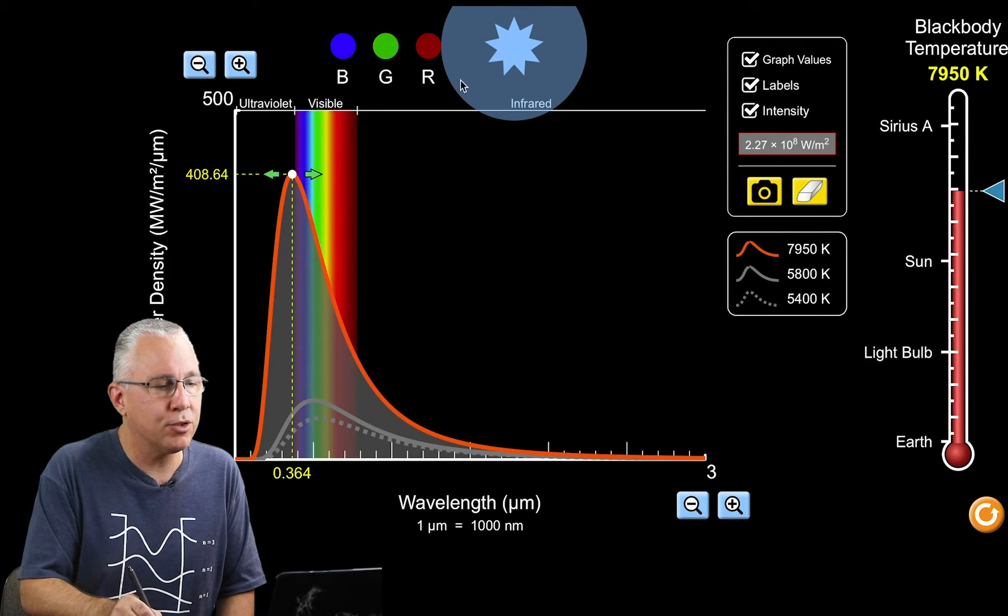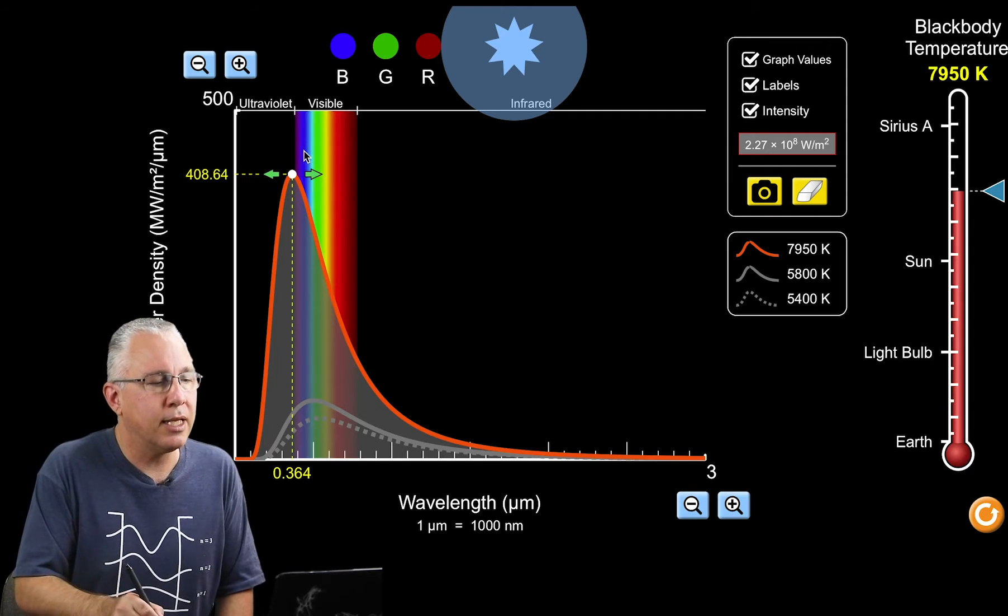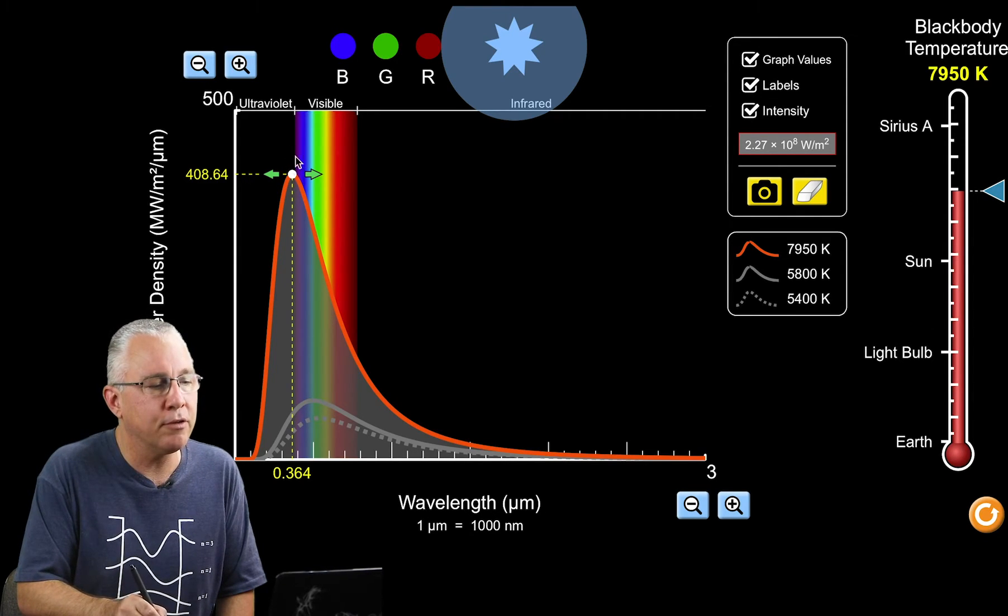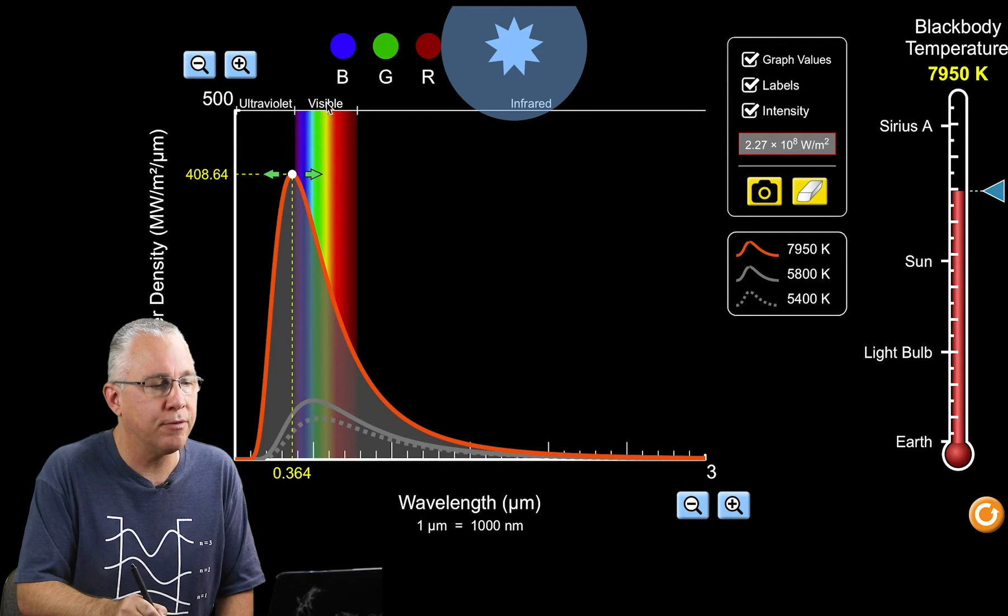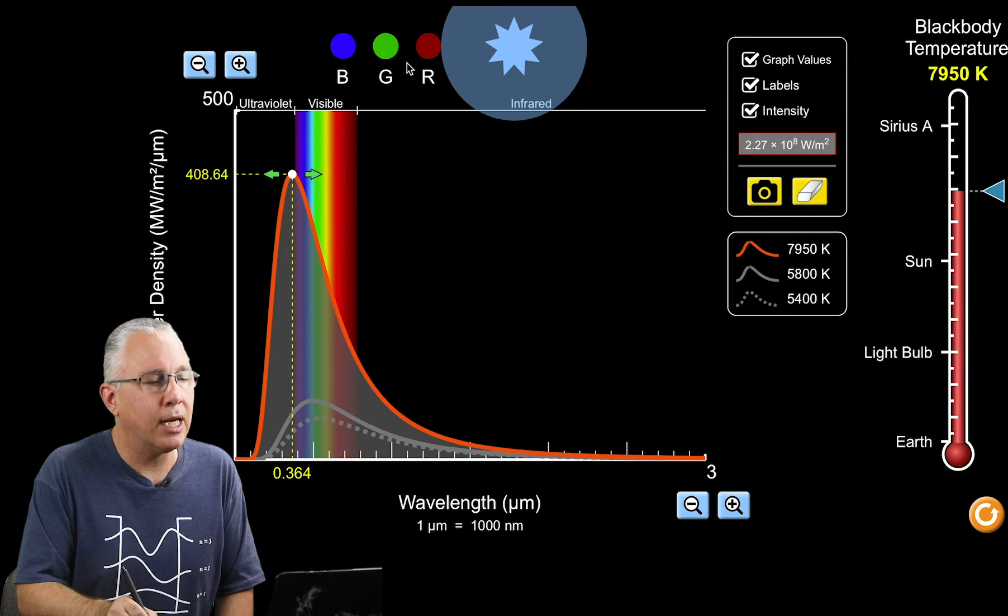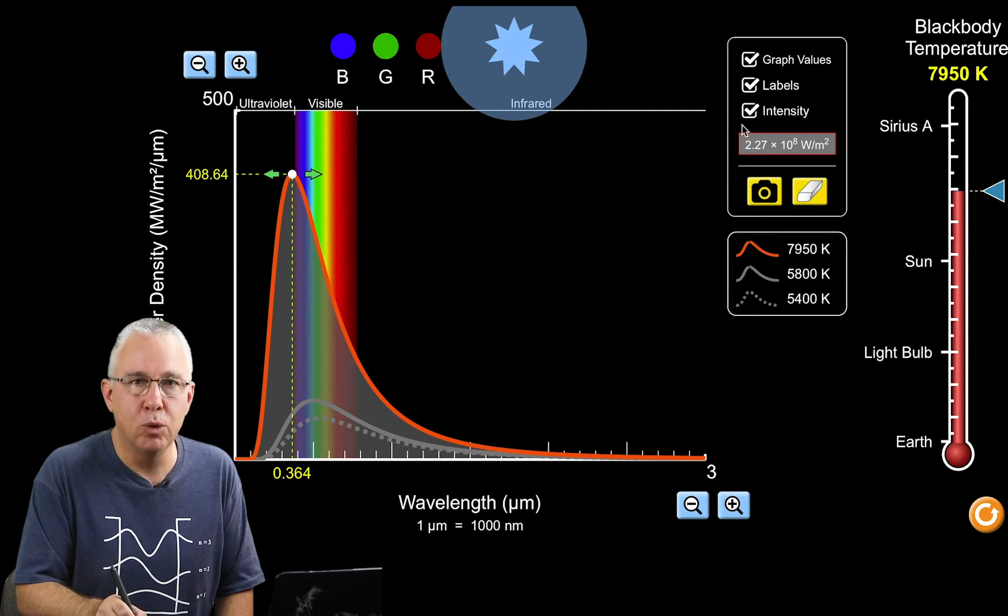Here we have the representation of our star that is significantly hotter. We now have a lot of energy in the short wavelengths of our visible and of course ultraviolet, and as a result we see more blues and less reds and greens, so we have a blue star.